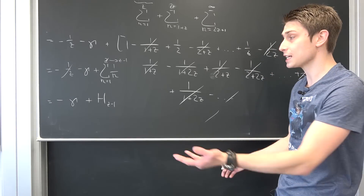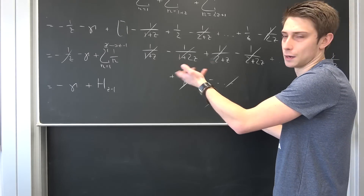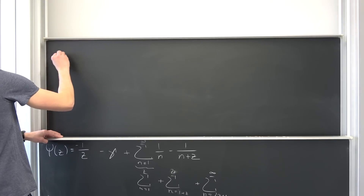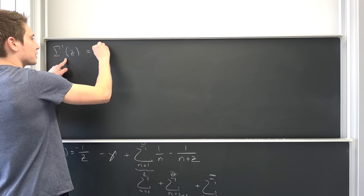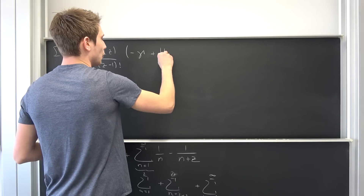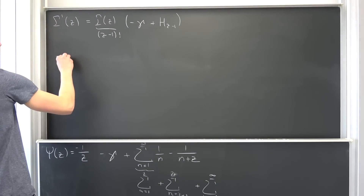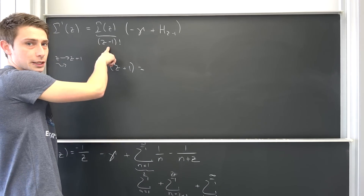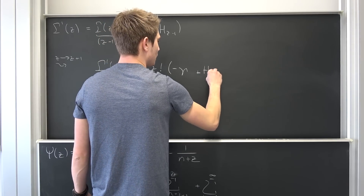Et voilà — we have successfully decomposed the polygamma function, and the numerical example fits with this more abstract result. From this, you can actually find gamma prime of z for integer z: multiplying both sides by gamma of z gives gamma prime of z equals (z−1)! times negative gamma plus H(z−1). If you substitute z plus one, you get gamma prime of z+1 equals z! times negative Euler-Mascheroni constant plus H(z). This is a compact and highly enjoyable formula.